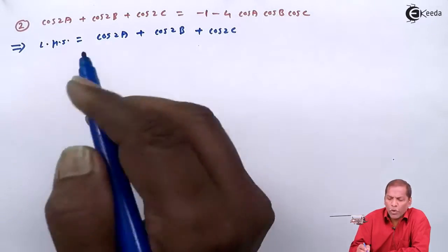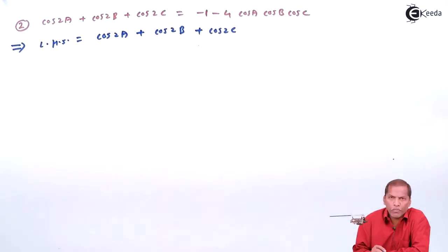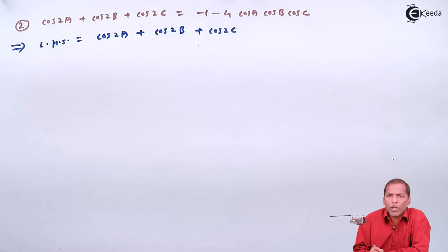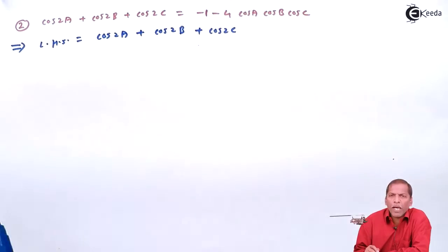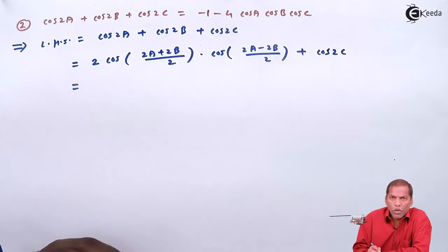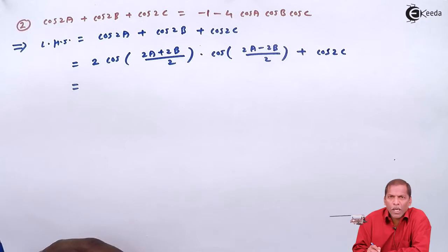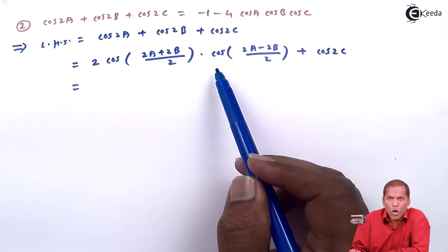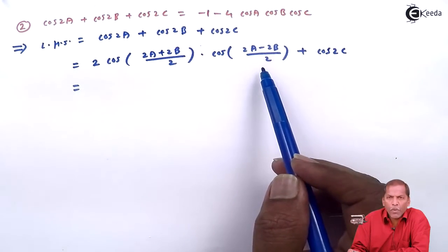In the present case, c takes value 2a and d takes value 2b. So the answer we get is 2·cos((2a+2b)/2)·cos((2a-2b)/2). Taking 2 common from the brackets, we get 2·cos(a+b)·cos(a-b).